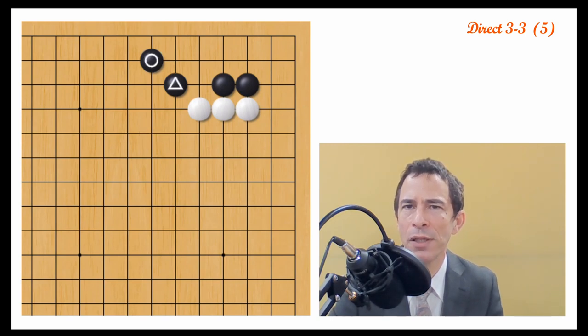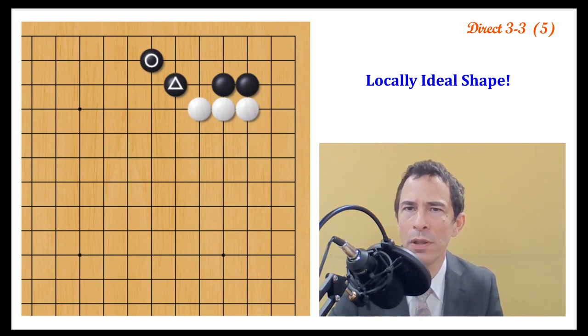Black is trying to play another move here, and when black does get that move locally, it's an ideal shape for black. The shape that black has in the upper right corner is very good, so this is what black is aiming at.